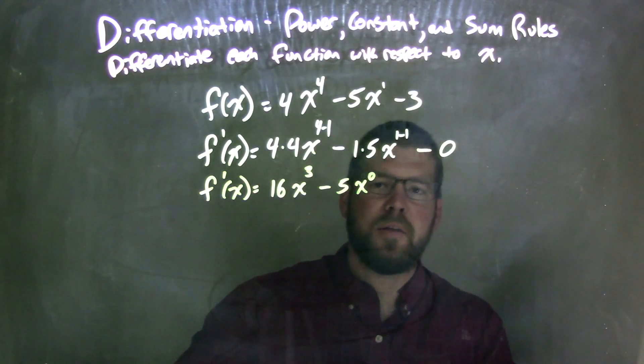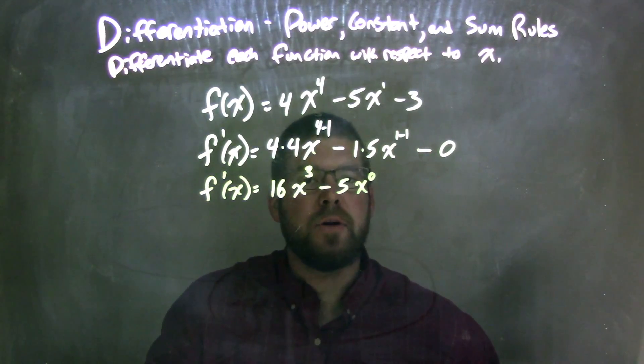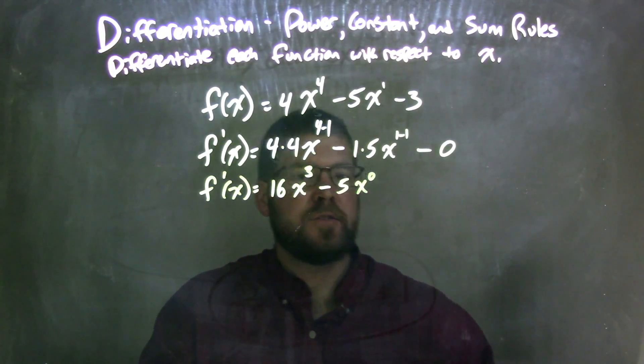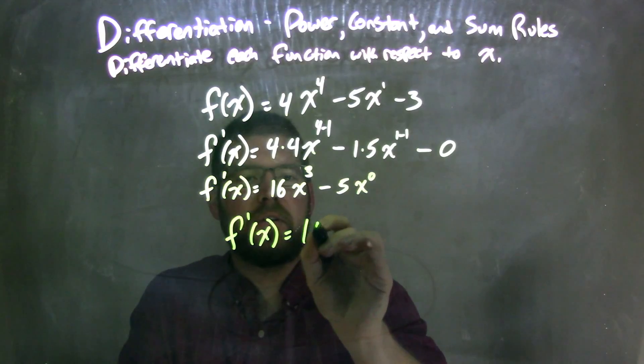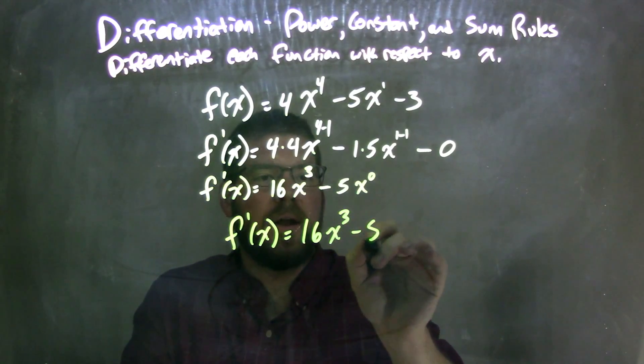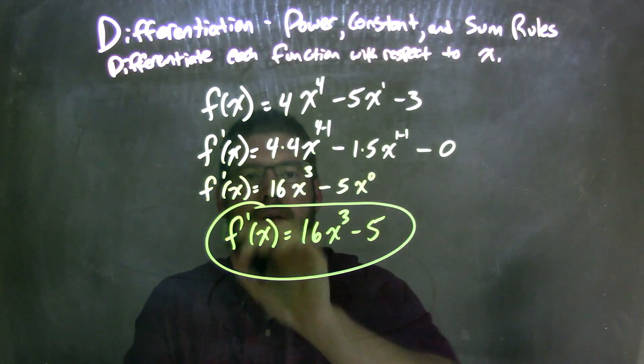And subtracting 0 doesn't do anything. Well, x to the 0 power is just 1, and so 5 times 1 is 5, so we have f prime of x is equal to 16x to the 3rd minus 5, and there we have it, final answer.